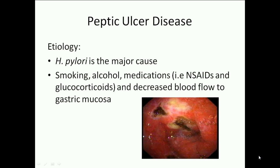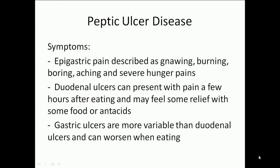Next is peptic ulcer disease. The etiology includes H. pylori as the major cause. Smoking, alcohol, medications such as NSAIDs and glucocorticoids, as well as decreased blood flow to gastric mucosa are also included in the etiology.